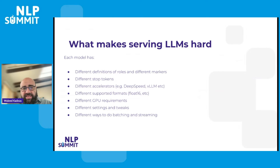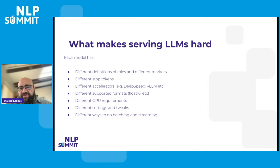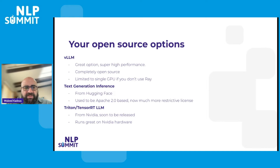You might say: these models are available on Hugging Face, I'll just wrap it in FastAPI and done. But that couldn't be further from the truth. Our experiences building a frontend to let people experience different LLMs showed that each LLM has different roles and different ways of marking the system input, user input, and assistant response. Each one has different stop tokens, different accelerators — some which work with some LLMs and some which don't — and different supported formats. Some models require particular GPUs. There are a lot of tweaks needed around batching and stripping. Those are the challenges when you actually deploy an open model.